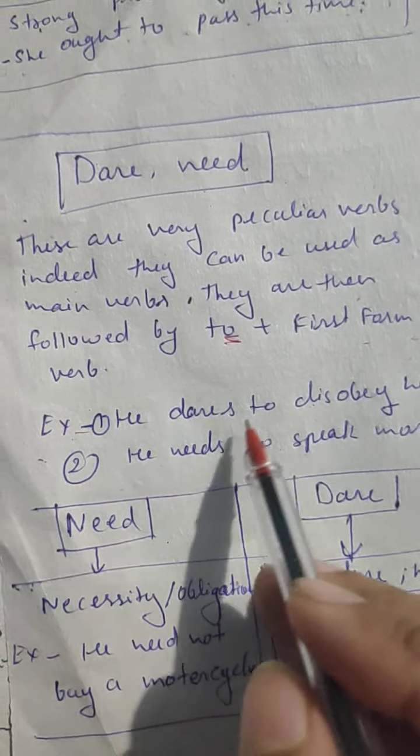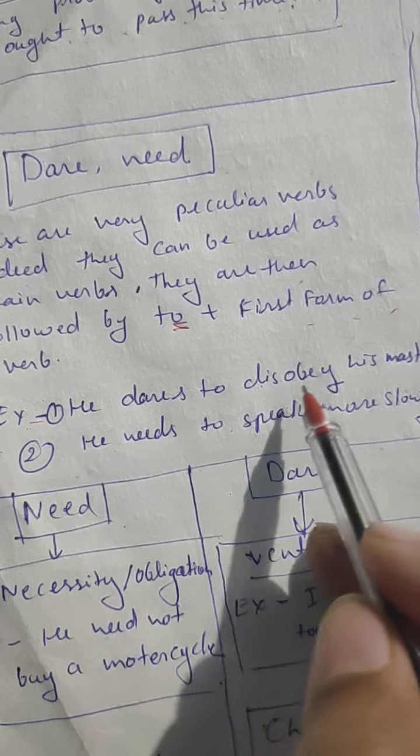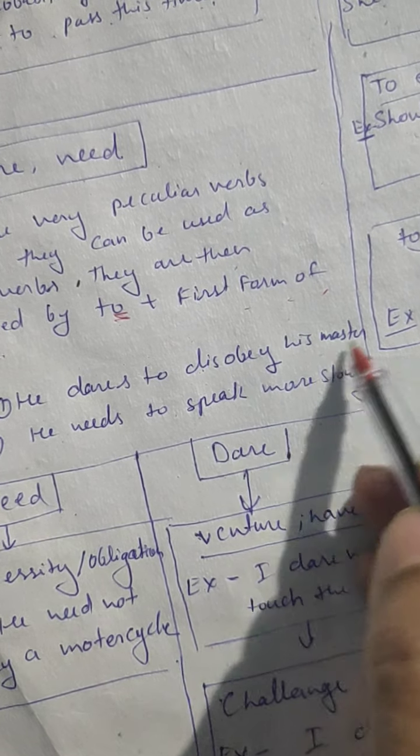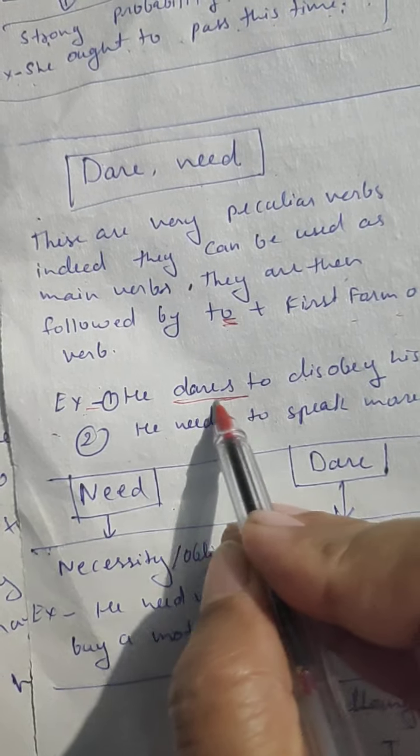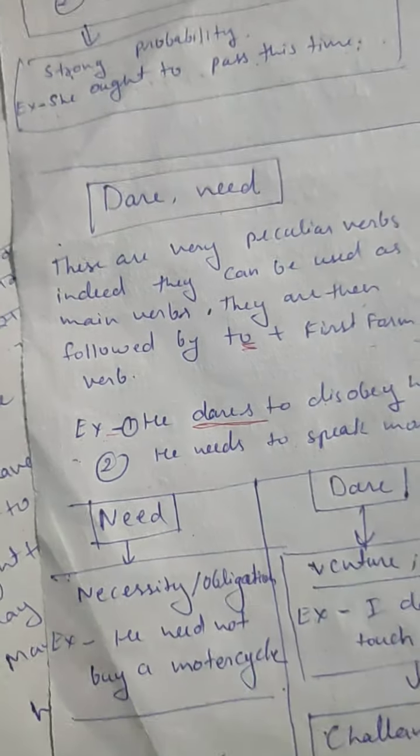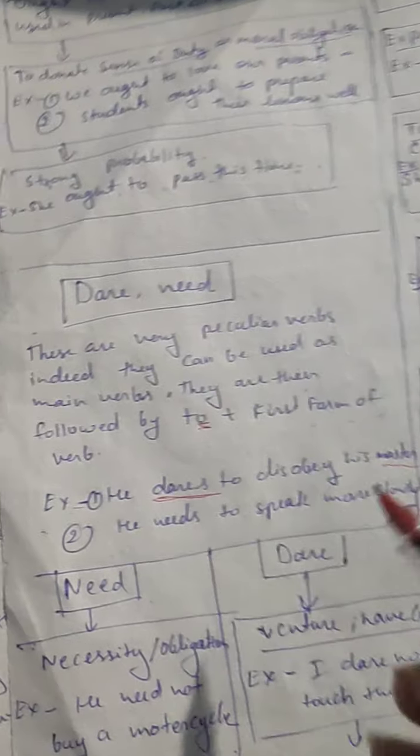Example: He dares to disobey his master. You know dare, it is used here as a main verb, so it is followed by 'to'.